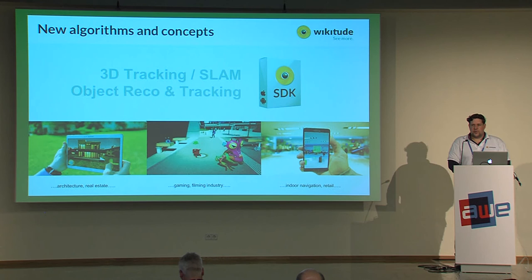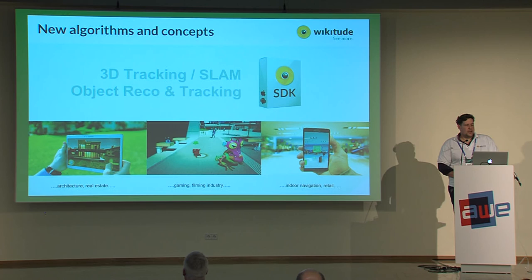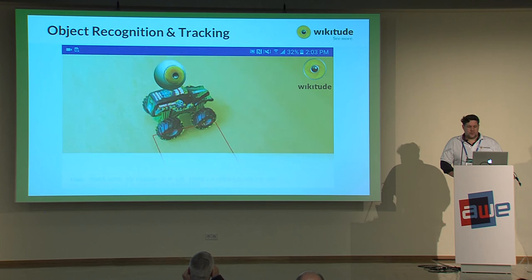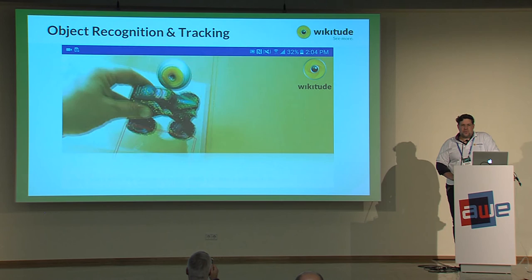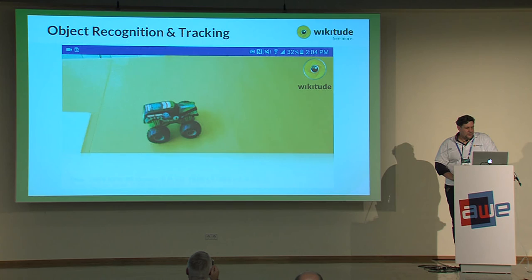Finally, what we're working on next is object recognition and tracking with a robust SLAM engine. You can see point clouds being tracked and the Wikitude logo on top of that. Come by our booth, check it out, and you will see a truck and other objects being tracked and recognized.